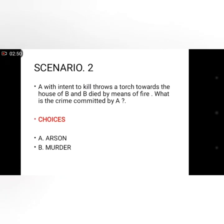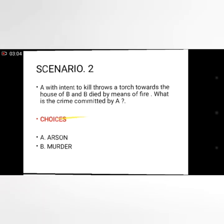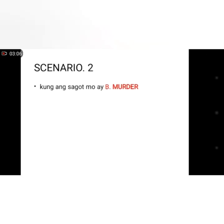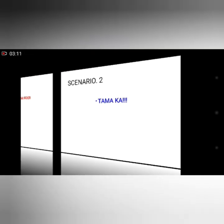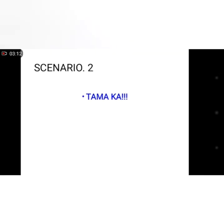Scenario 2: A, with intent to kill, throws a torch towards the house of B, and B dies by means of fire. What is the crime committed by A? Choices: A. Arson, B. Murder. Kung ang sagot mo ay B. Murder — tama ka.